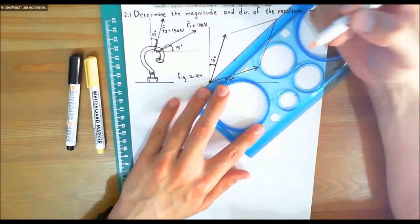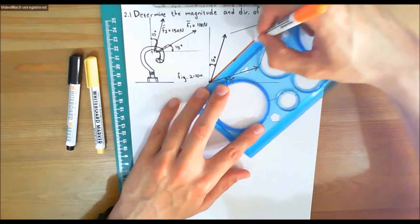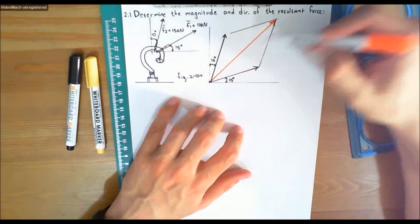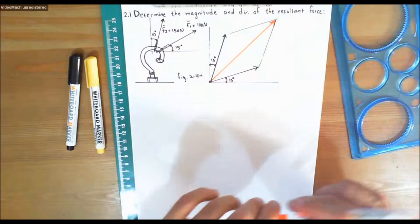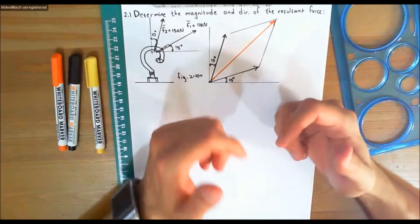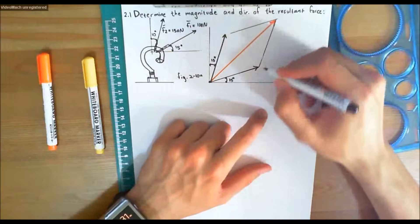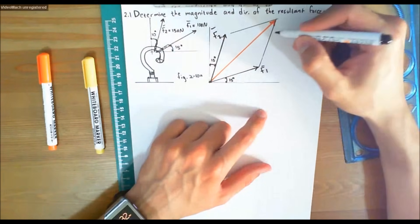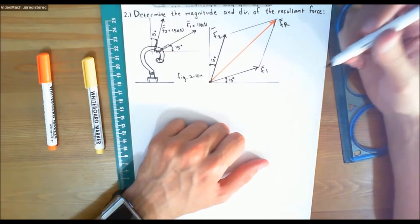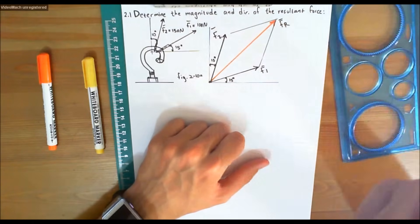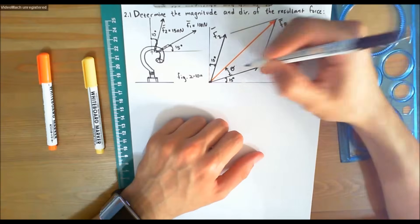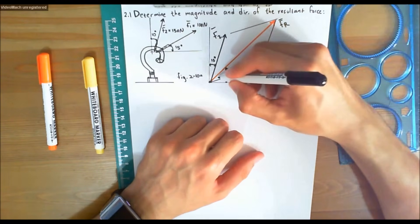Two components add up to form a resultant force, which would be the diagonal of the parallelogram. I've just constructed a parallelogram, and the resultant force would be the diagonal of this parallelogram. The parallelogram law of addition is shown in this figure. The two unknowns would be the magnitude of FR and the angle theta. Every vector has a magnitude and direction. Let's call this angle theta, and at the same time let's call the angle from the x-axis phi.